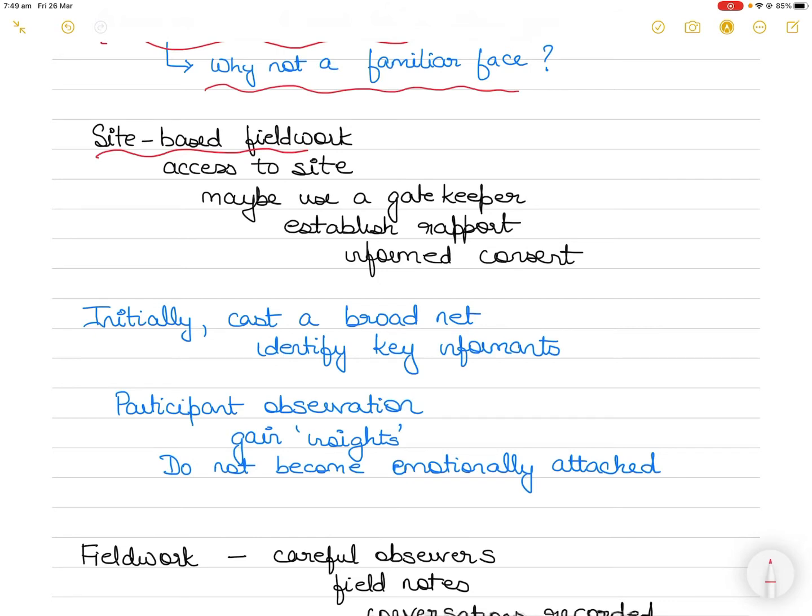Thus, an essential first step in an ethnographic study is to gain legitimate access to the site. Often researchers may have to go through someone called a gatekeeper who will provide you with that access for an extended period of time, a person who can smooth the way for your entrance into the situation. That person could be a principal, a teacher, a tribal chief, a program director, depends on which cultural group you are researching.